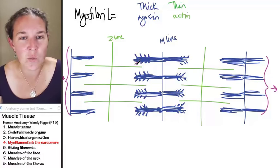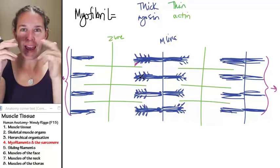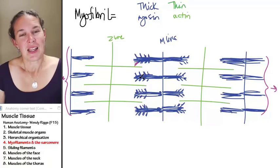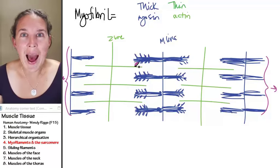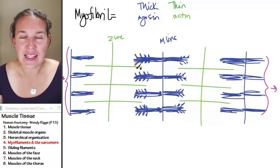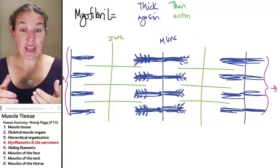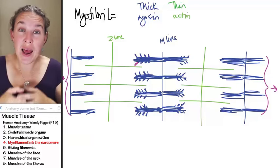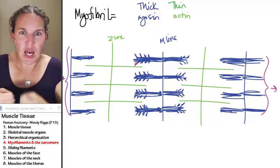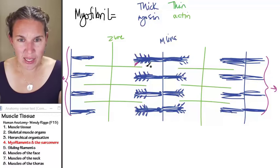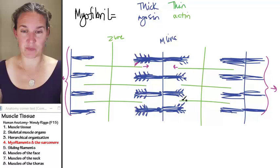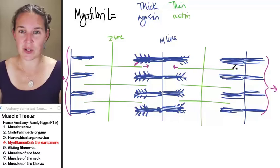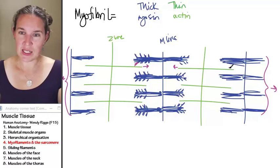Can you visualize what would happen with those little heads? What actually happens is those heads grab the actin, which is the thin filaments. The little heads grab the thin filaments and pull on them, moving them in this direction.